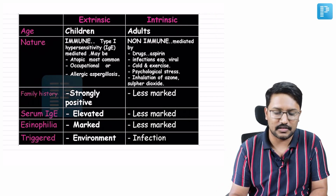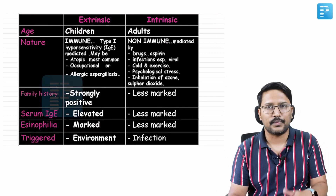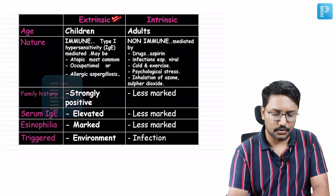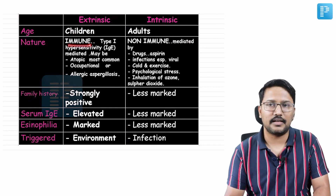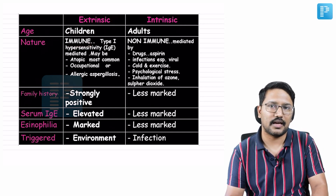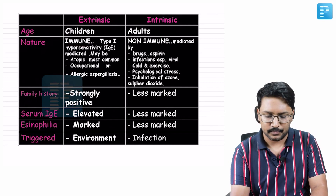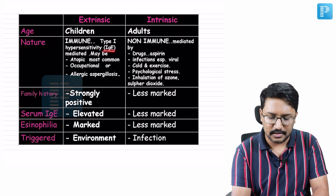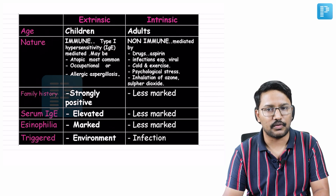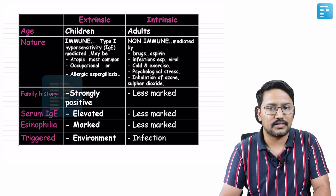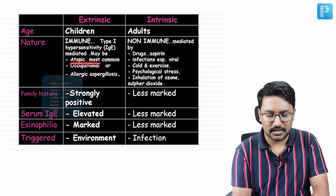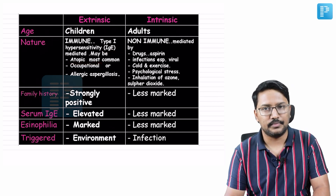Looking at the differences between extrinsic and intrinsic asthma: extrinsic is immune-mediated and is usually a type one hypersensitivity reaction — an IgE-mediated immune response to an external allergen.